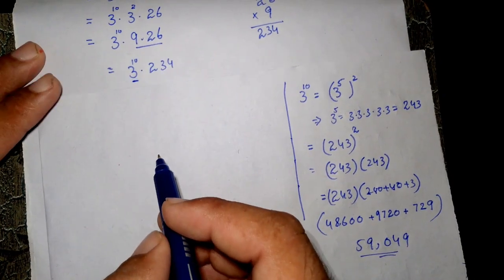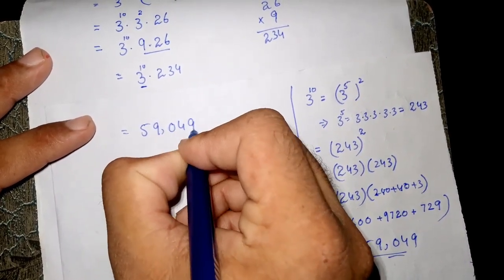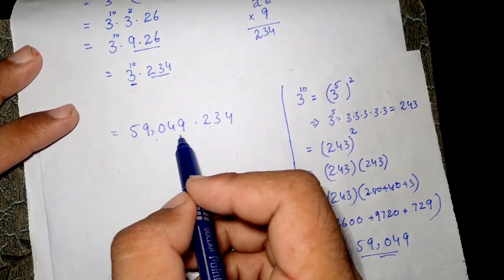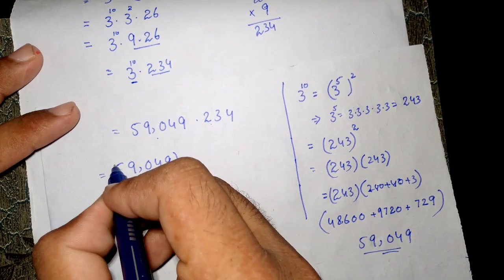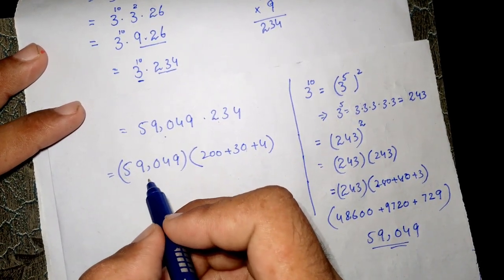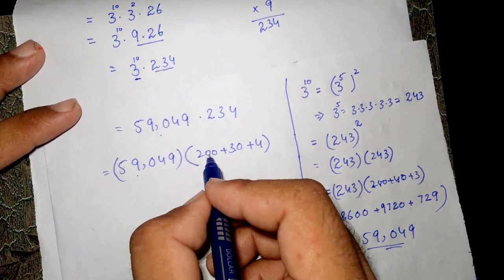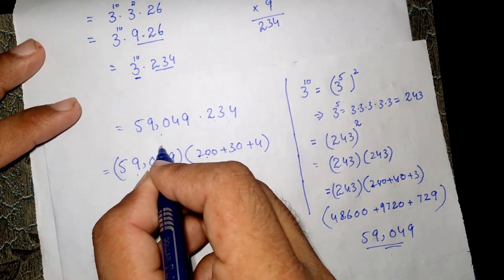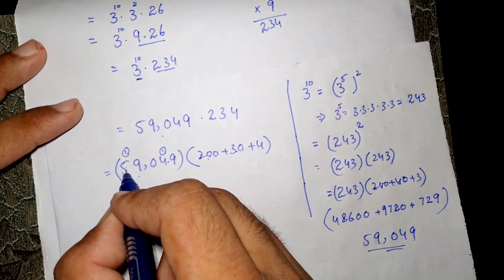So we have to replace 3 to the power of 10 by this number, 59,049, times 234. Now again we have to multiply these numbers. So 59,049 times 200 plus 30 plus 4. For 200: 2 times 9 is 18, carry 1; 2 times 4 is 8 plus 1 is 9; 2 times 0 is 0; 2 times 9 is 18, carry 1; 2 times 5 is 10 plus 1 is 11. So the 200 partial product is 11,809,800.